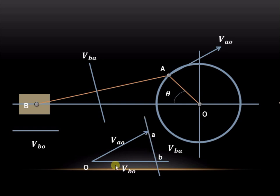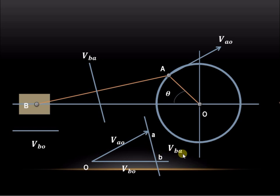Wherever these two vectors intersect, that is our point of intersection. Since we have velocity of B with respect to A in one vector and velocity of B with respect to O in the other, B is the common point, making it the point of intersection. This gives us velocity of B with respect to O and velocity of B with respect to A. The arrows are important because vectors are represented in both magnitude and direction. As we are finding velocity of B with respect to A, the arrow must be towards B, and for velocity of B with respect to O, the arrow must also be towards B.